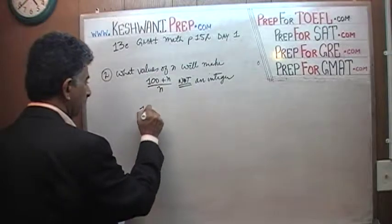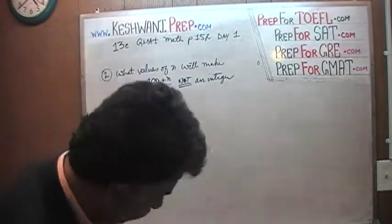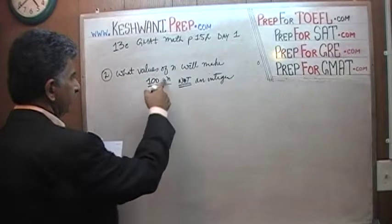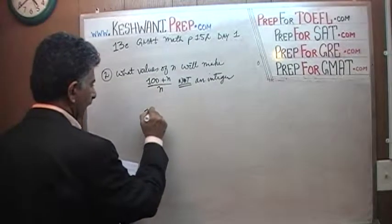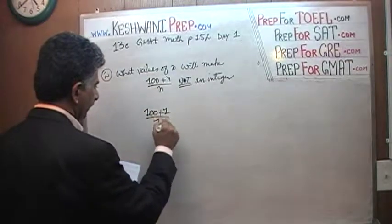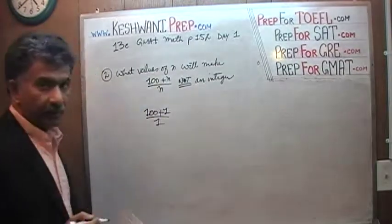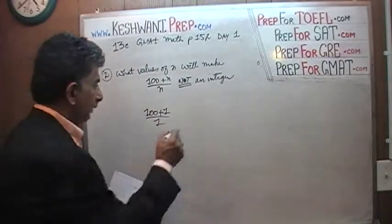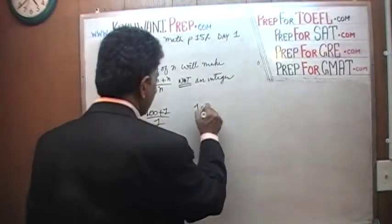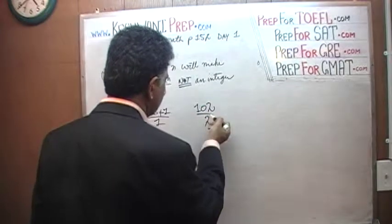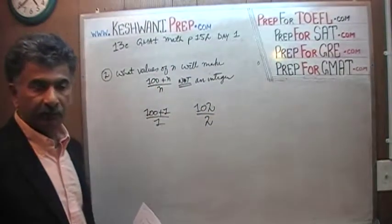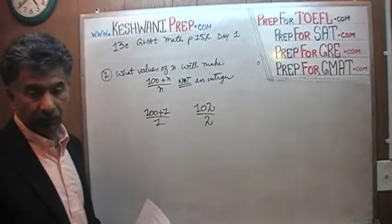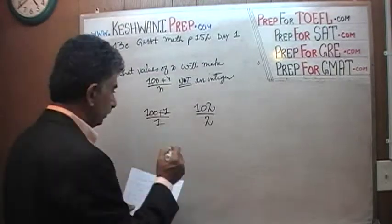For n equals 1: 100 plus 1 over 1 is 101 over 1, which is obviously an integer. For n equals 2: 102 over 2 comes out to 51 — 102 is an even number, of course it's divisible by 2, so that's an integer.